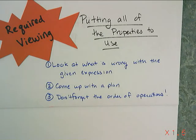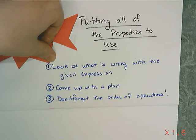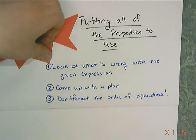In this lesson, we're going to do some examples of problems where you have to use multiple properties to solve. It's not just a simple distribution problem — it might require distribution and combining like terms. The first thing you do is look at the problem very carefully and see what's wrong with it. Why is it not simplified? Is it because there are parentheses in the way? Are there like terms that need to be combined? Come up with a list of things you need to do to make the equation simplified.